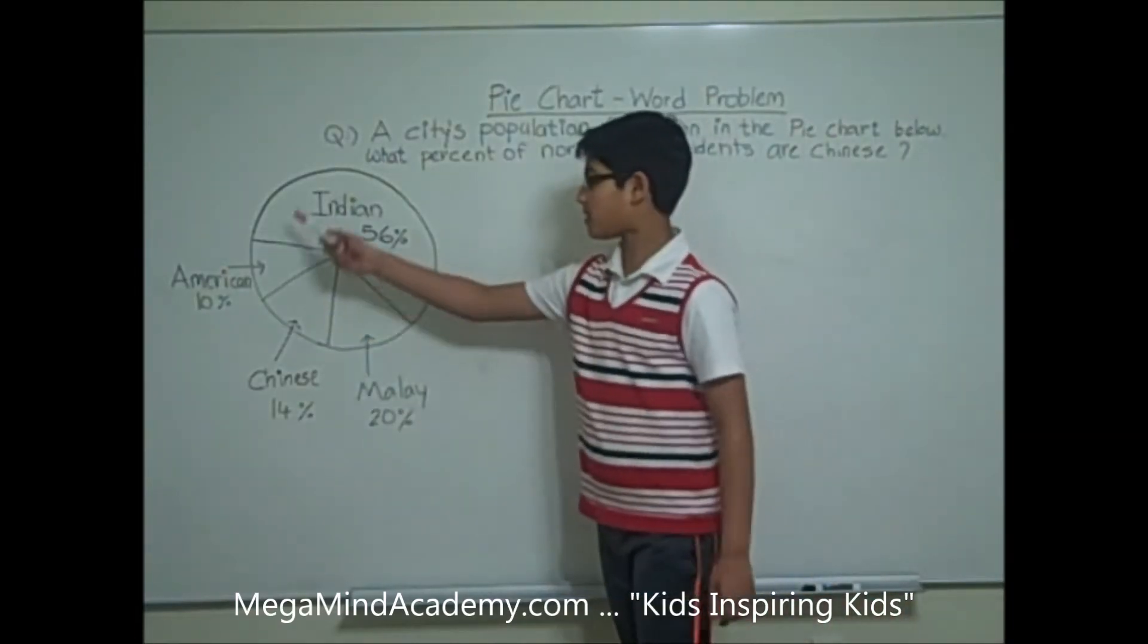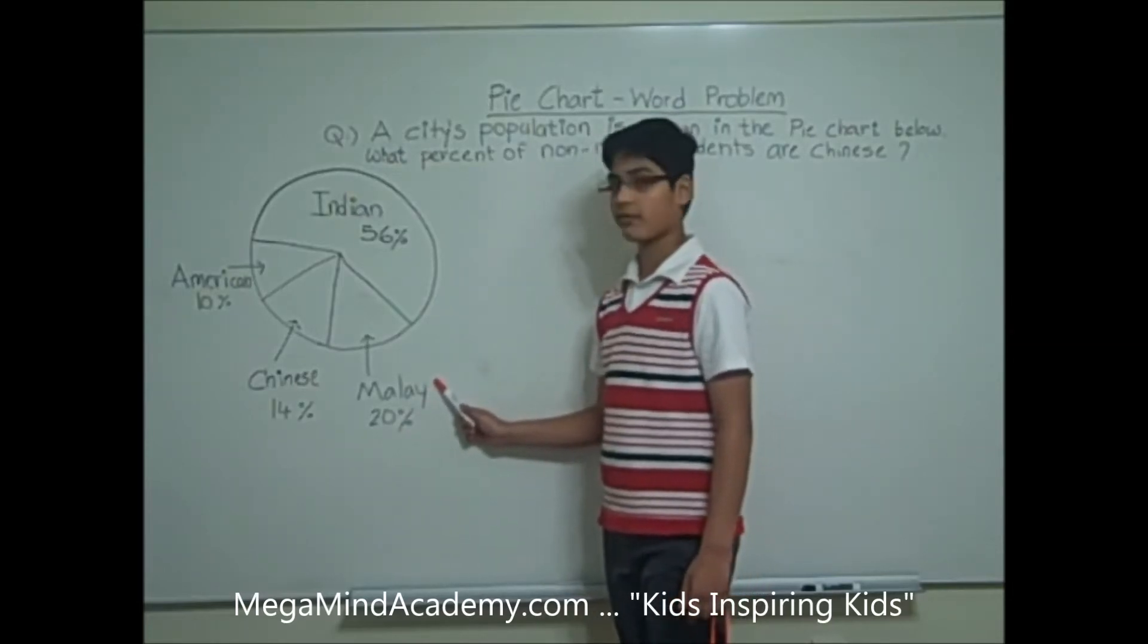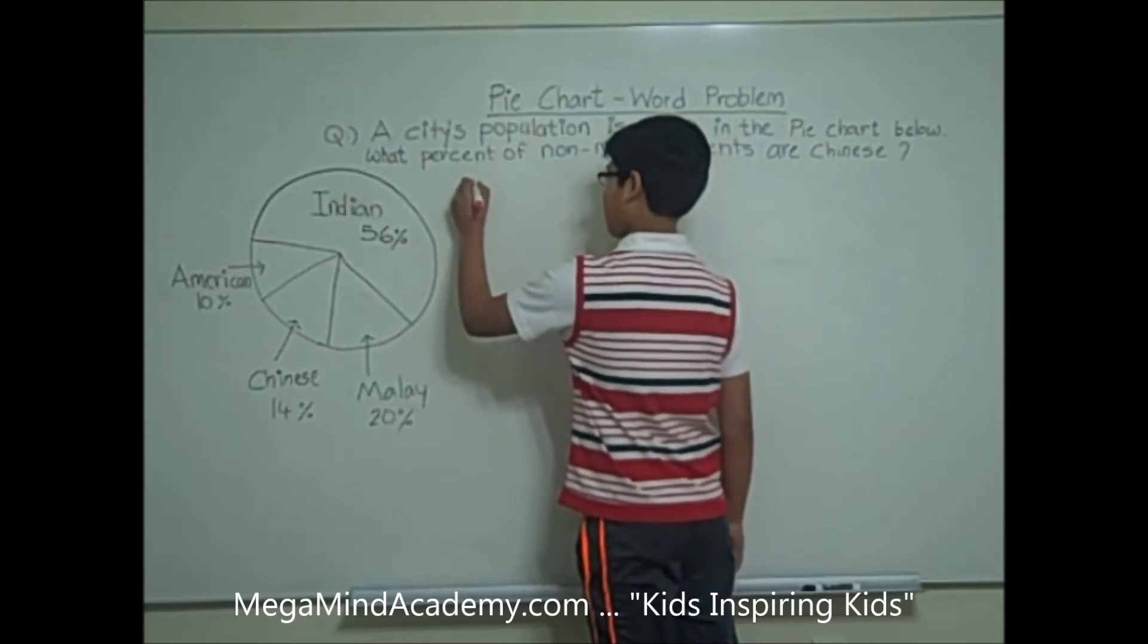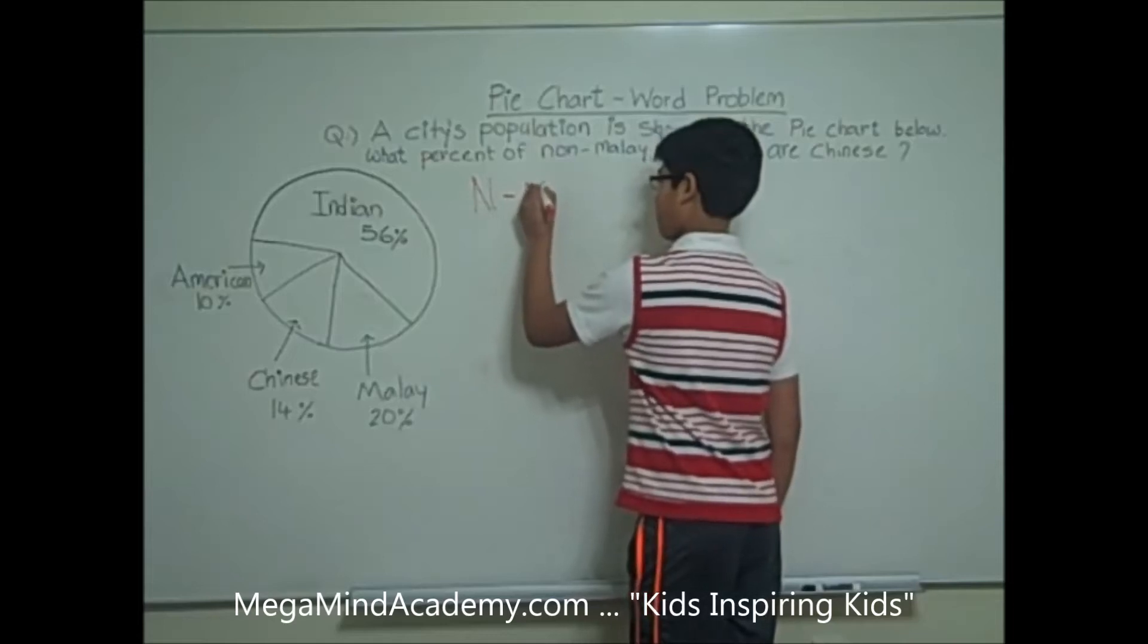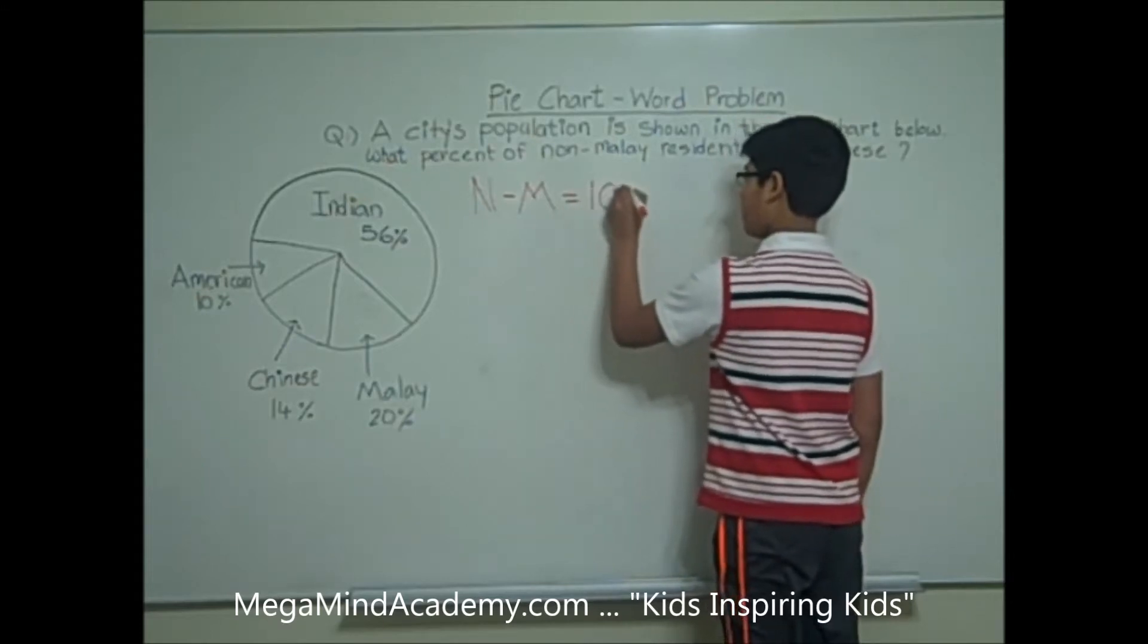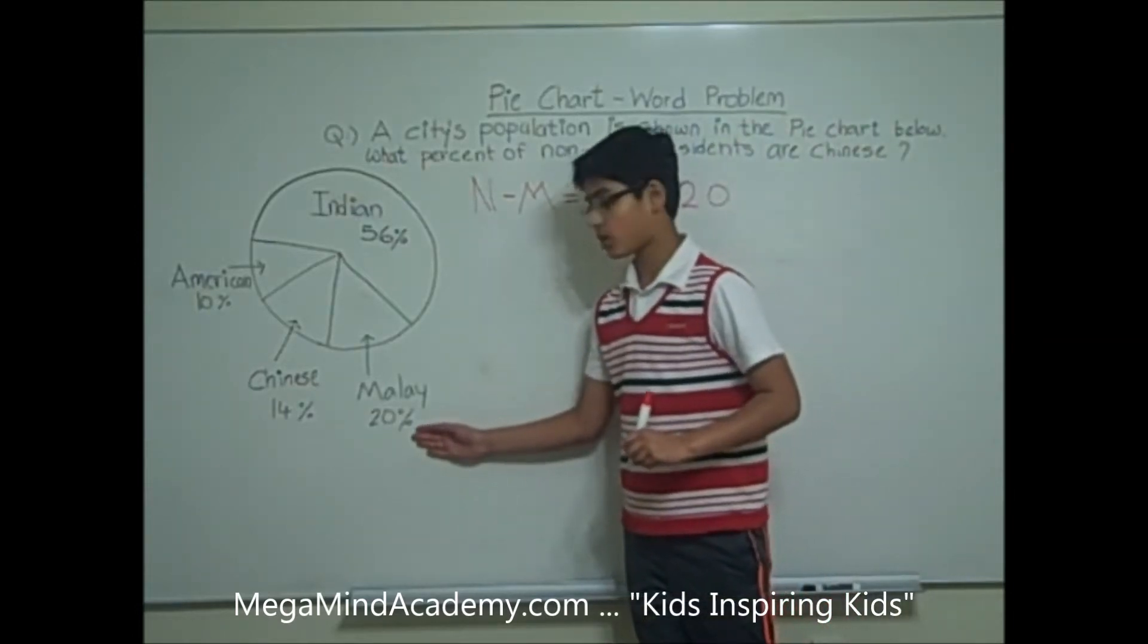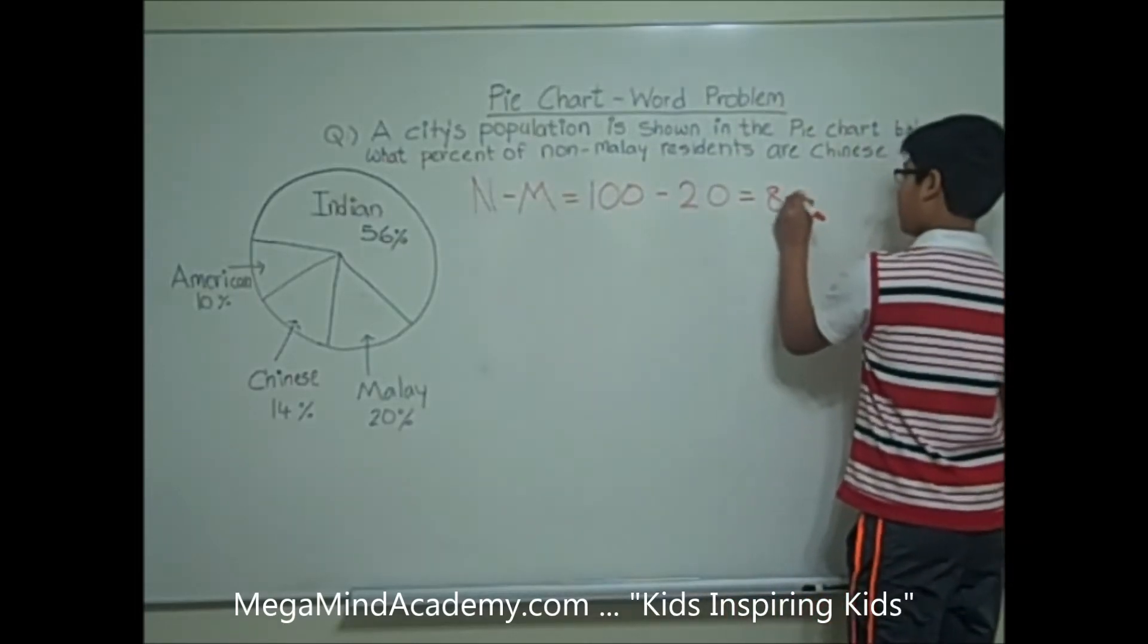Now we can see from this pie chart that 20% of the residents are Malay residents. So this means that the percent of non-Malay residents are equal to 100 minus 20%, which is equal to 80%.